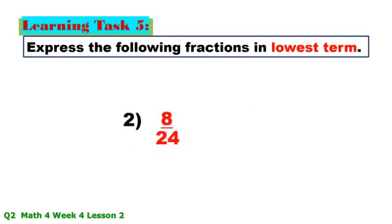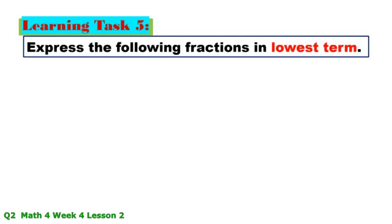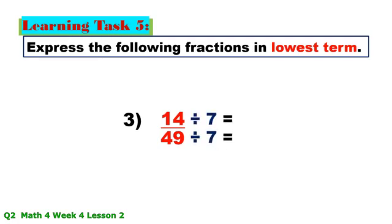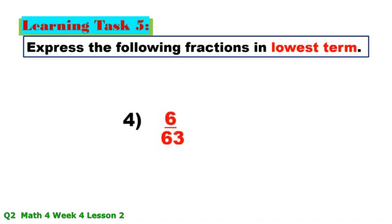Number 2: 8/24 — GCF is 8; 8 ÷ 8 = 1, 24 ÷ 8 = 3, answer is 1/3. Number 3: 14/49 — GCF is 7; 14 ÷ 7 = 2, 49 ÷ 7 = 7. Number 4: 6/63.